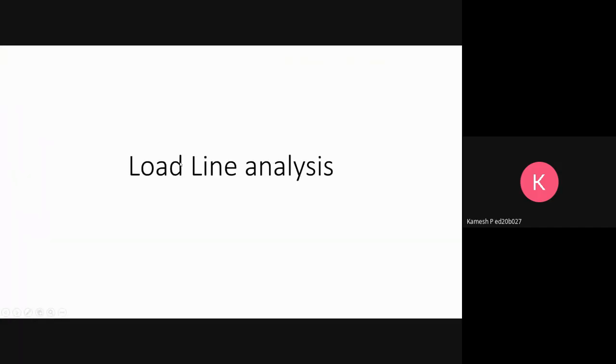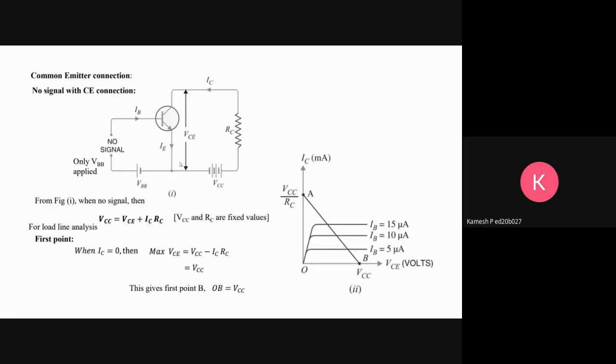Now let's see the load line analysis. This is the common emitter connection as you have seen in the previous video. When there is no signal applied from the base side, you can see that this is the only circuit that exists and you can get the formula of VCE: VCC is equal to IC*RC plus VCE.